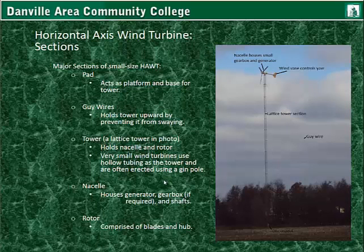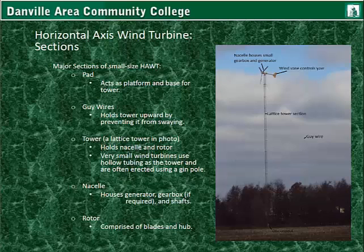Major sections of small size horizontal axis wind turbines include the pad at the base, which acts as a platform for the tower, and guy wires that hold the tower upward by preventing it from swaying. The tower can be a lattice or tubular type. Also the nacelle at the top, which houses the generator, gearbox if required, and other shafts and components. The rotor is comprised of the blades and the hub, with the hub at the center.